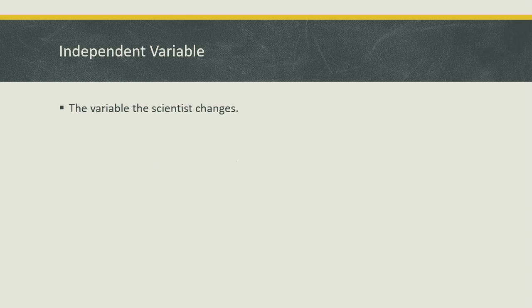Let's start with the independent variable. This is a variable the scientist changes. Another way to think about this is when you look at an experiment's write-up, you want to ask yourself: what is causing the change?